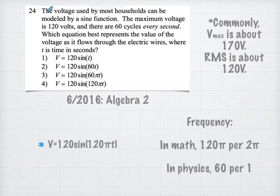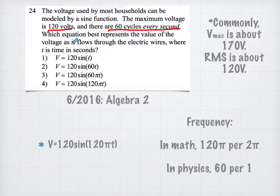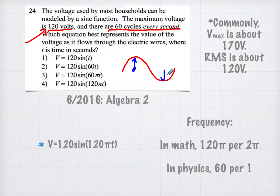Let's look at an example: the voltage used by most households can be modeled by a sine function — which is true, because we get AC alternating current that follows a sine curve. The maximum voltage is 120 volts and there are 60 cycles every second, meaning 60 hertz, which is true in the US. In Europe they use 50 cycles — 50 hertz. The question from June 2016 Algebra 2 asks which equation best represents the voltage as it flows through the wire where T is time in seconds. The amplitude is 120, describing how high the voltage goes up and down.